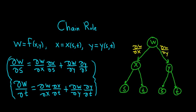Down at the bottom, everything is a partial because x is a function of s and t. To get from x to s, it's ∂x/∂s, and to get from x to t, it's ∂x/∂t. Likewise, to get from y to s, it's ∂y/∂s, and to get from y to t, it's ∂y/∂t.